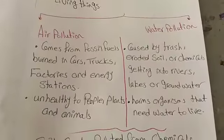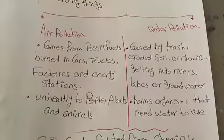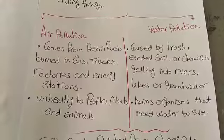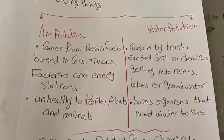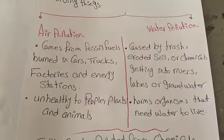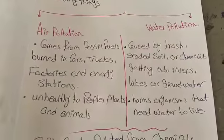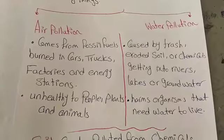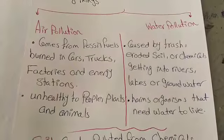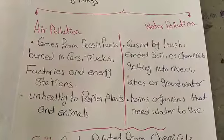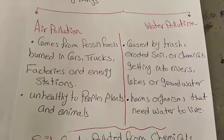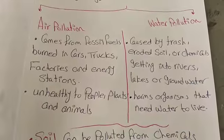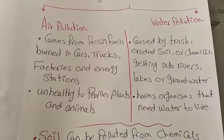Air pollution comes from fossil fuels burned in cars, trucks, factories and energy stations. But water pollution is caused by trash, eroded soil or chemicals getting into rivers, lakes or ground water.